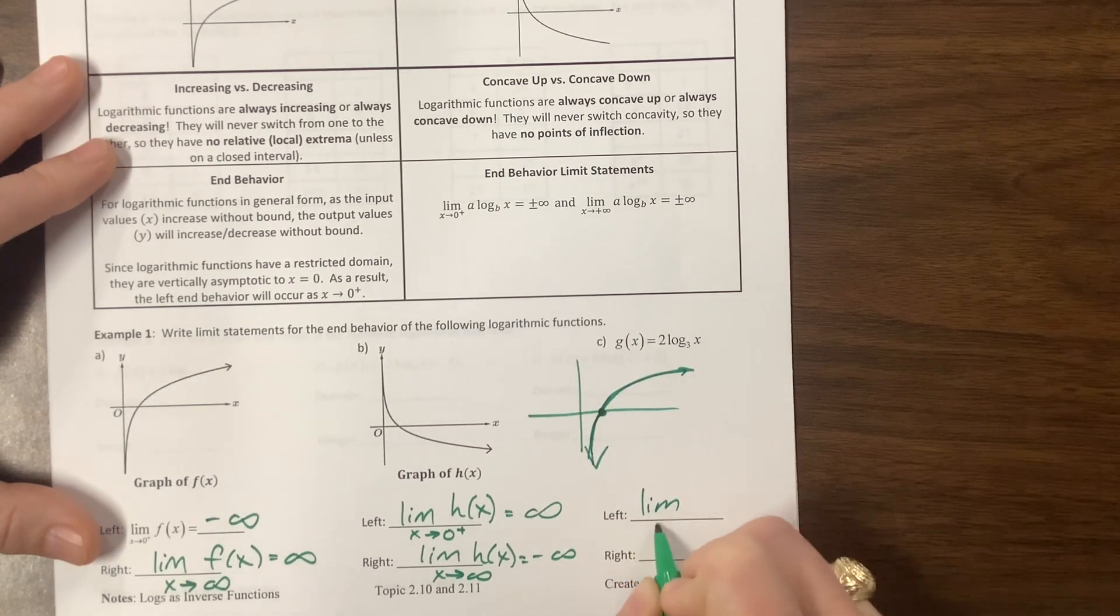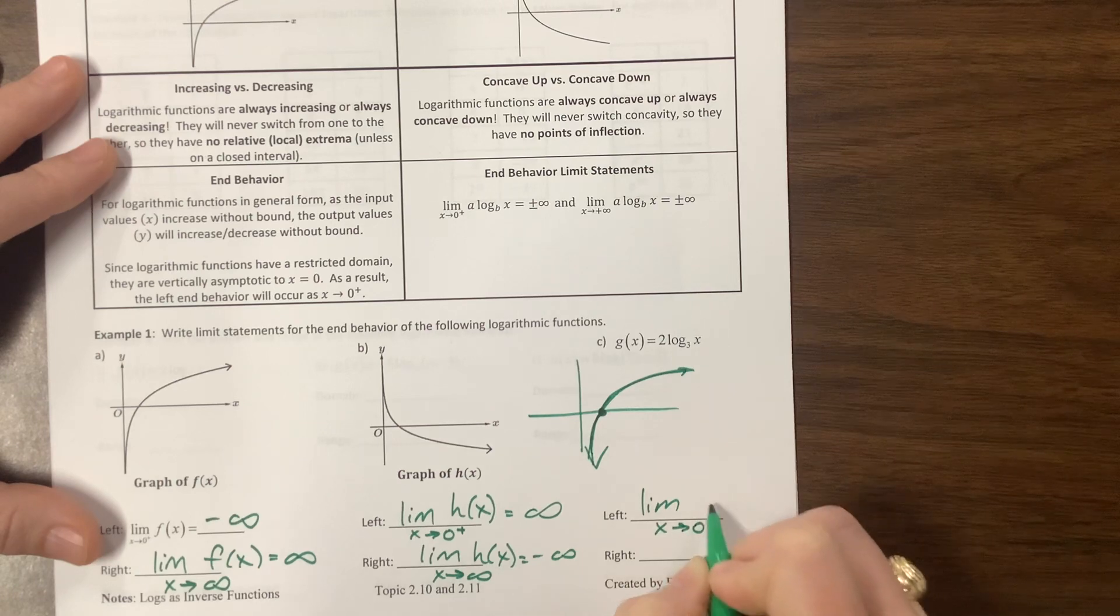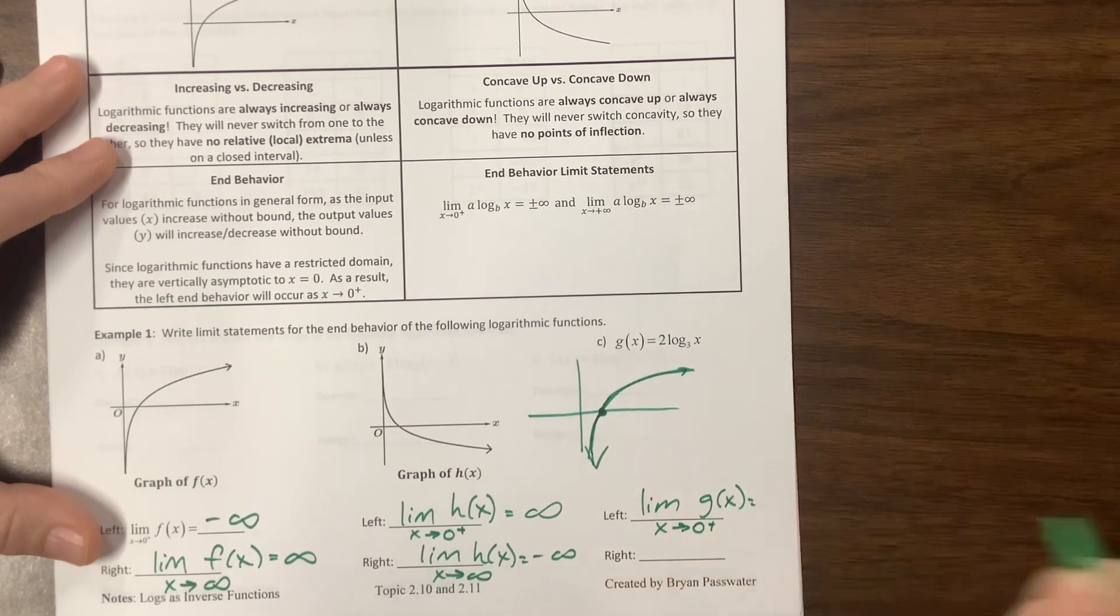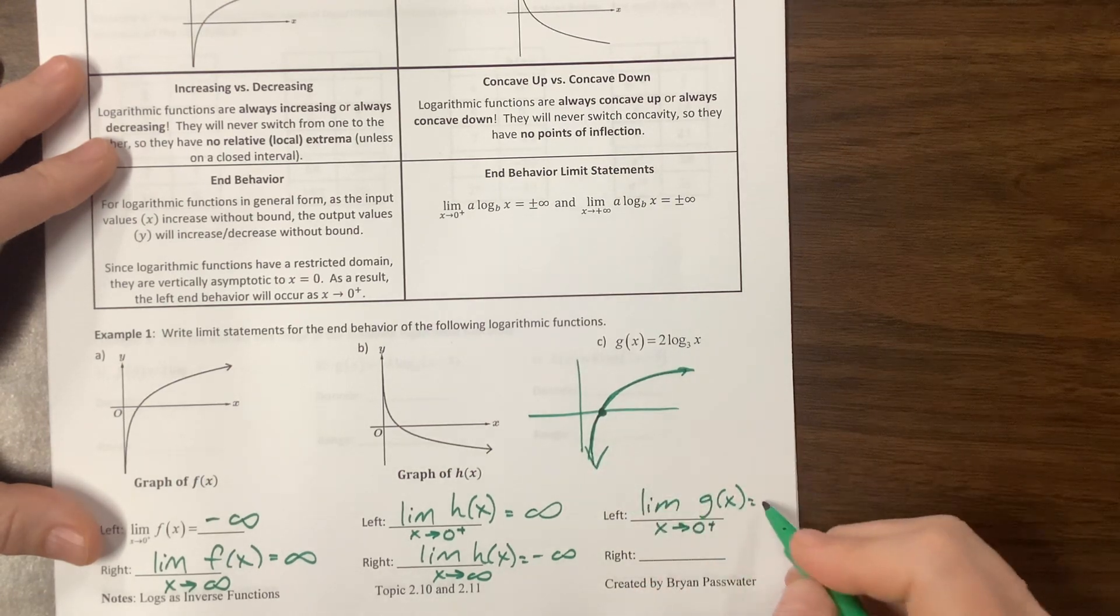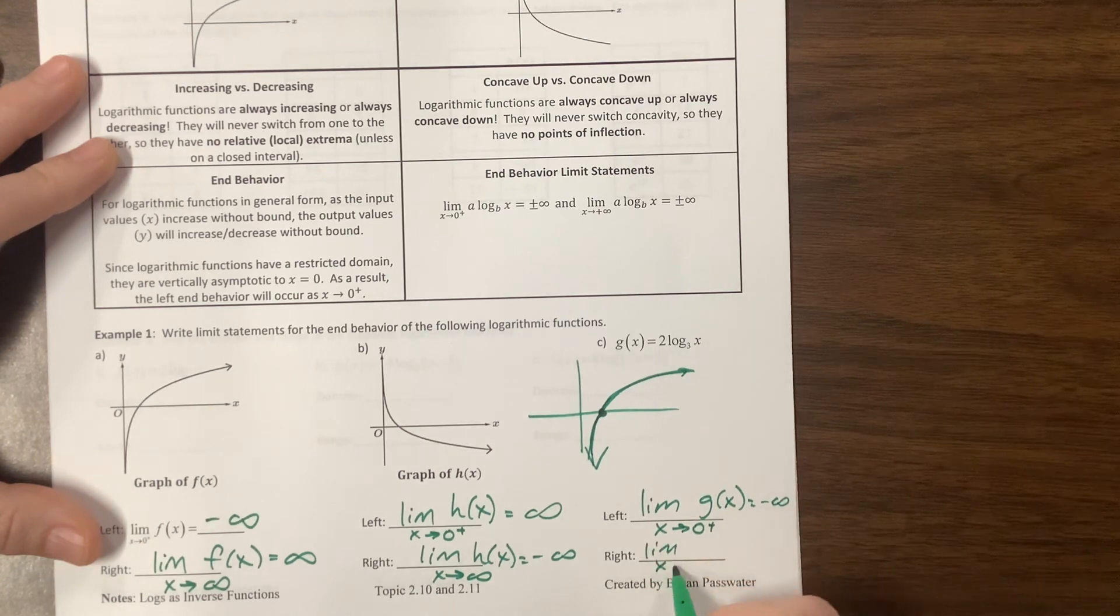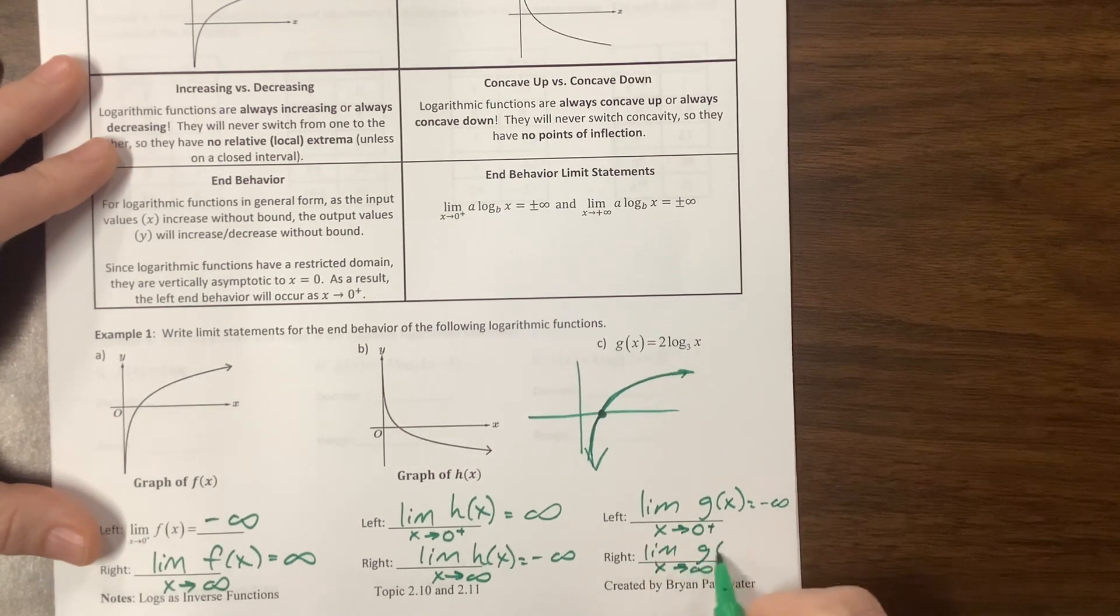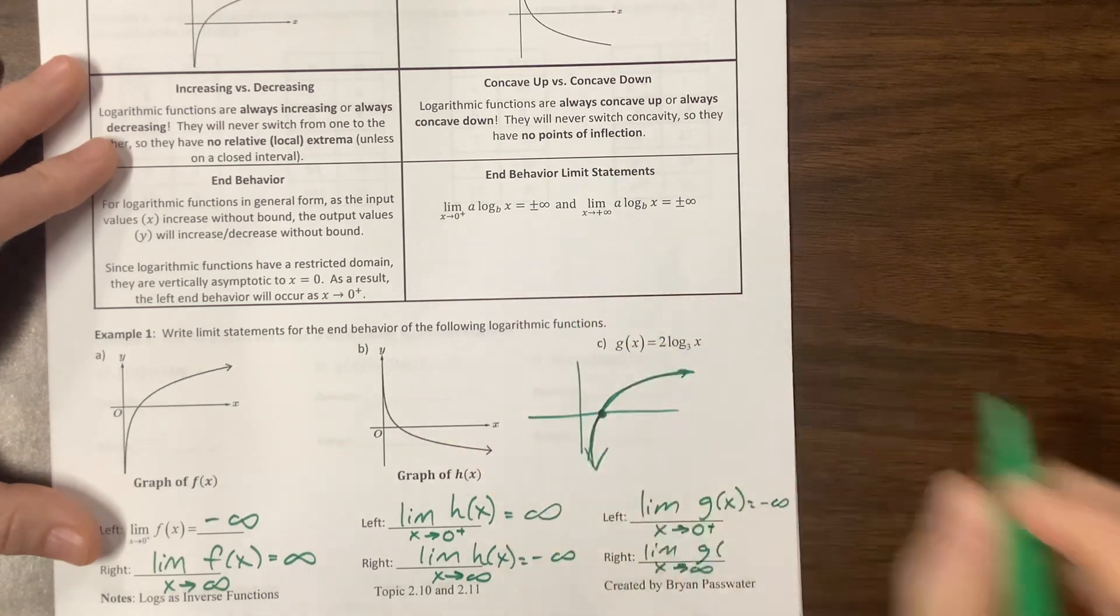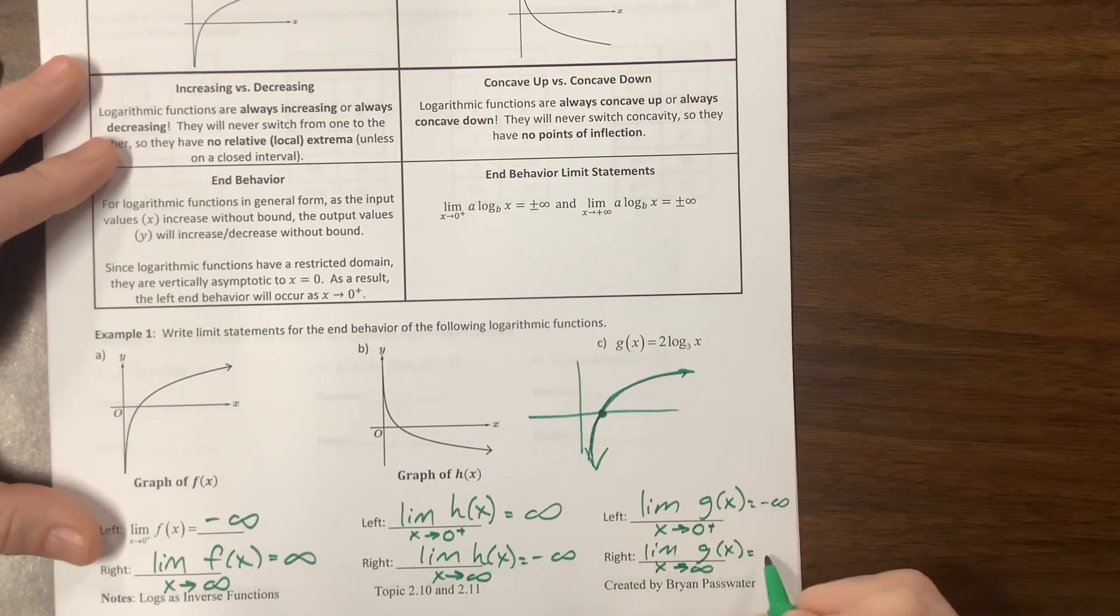So the left of the limit as x goes to zero from the right of g of x is equal to negative infinity. The limit as x goes to infinity of g of x. Can you see this fly? Oh, he came back. And that's equal to positive infinity.